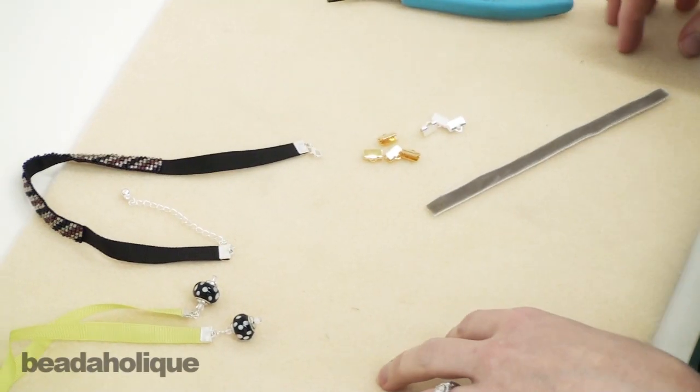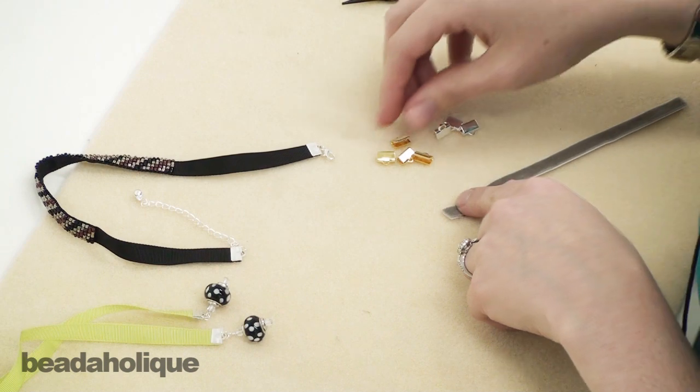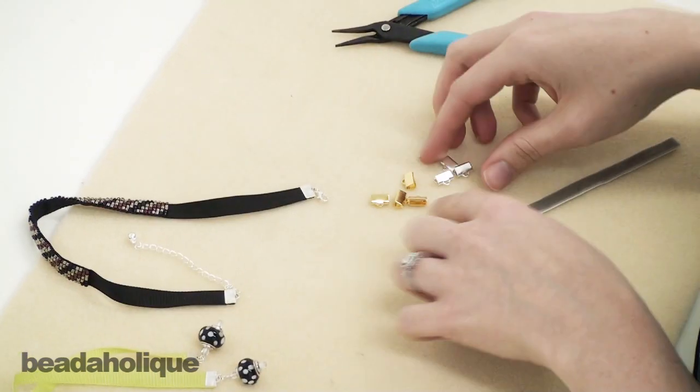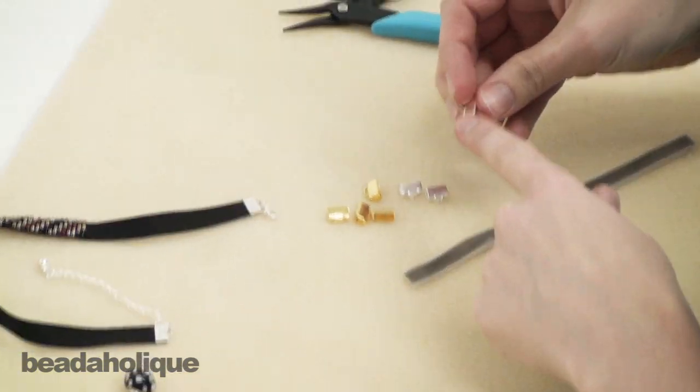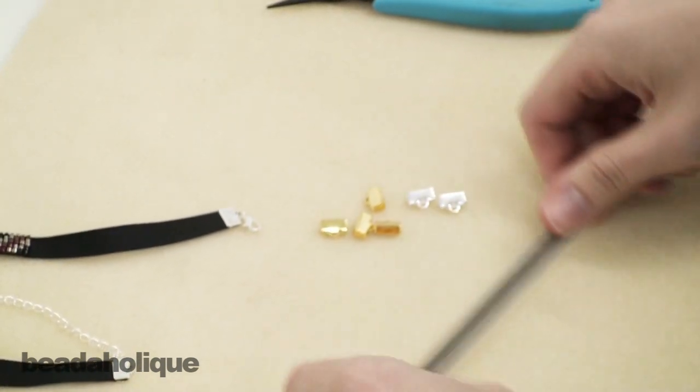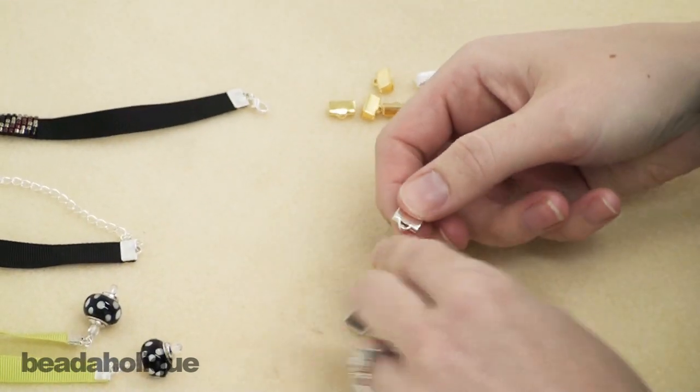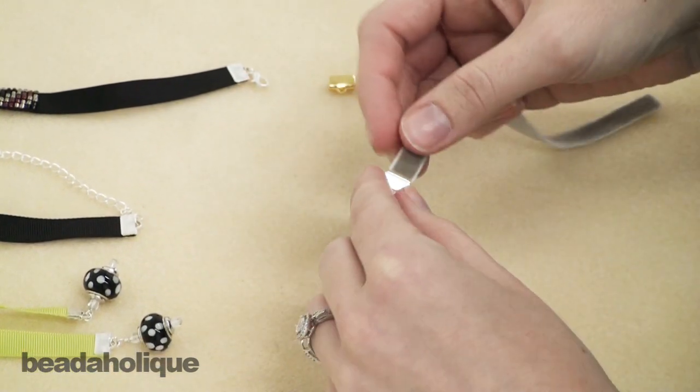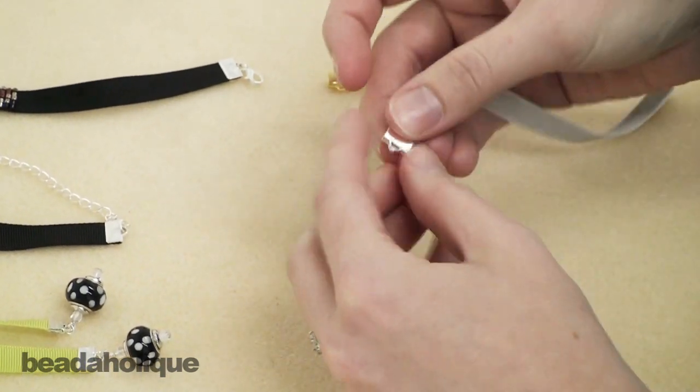Hi this is Megan with Beadaholique.com and today I want to show you how to use a ribbon crimp. A ribbon crimp is kind of like a crimp bead except it goes on ribbon like you would expect from the title and they come in different sizes to match the width of ribbon.